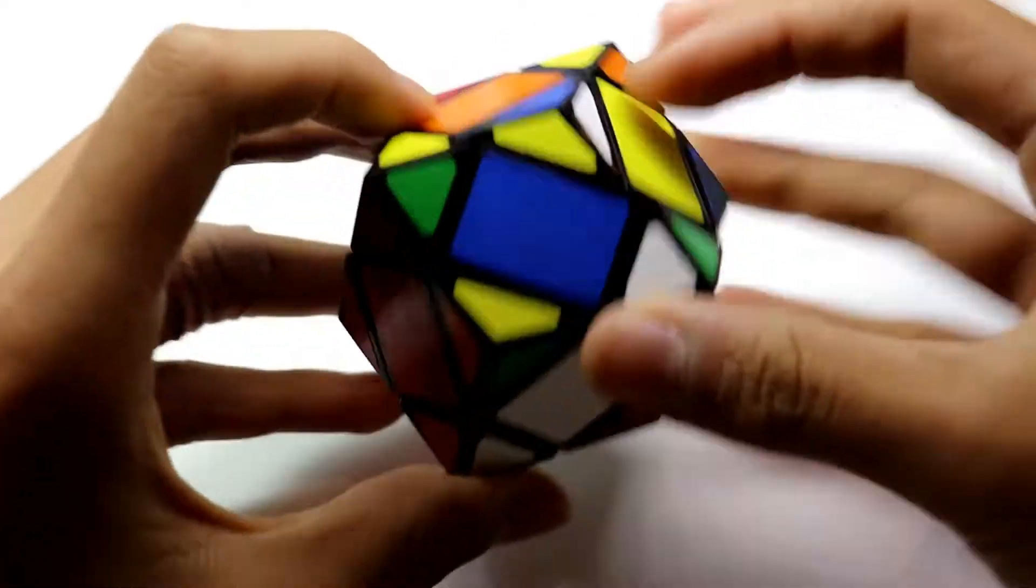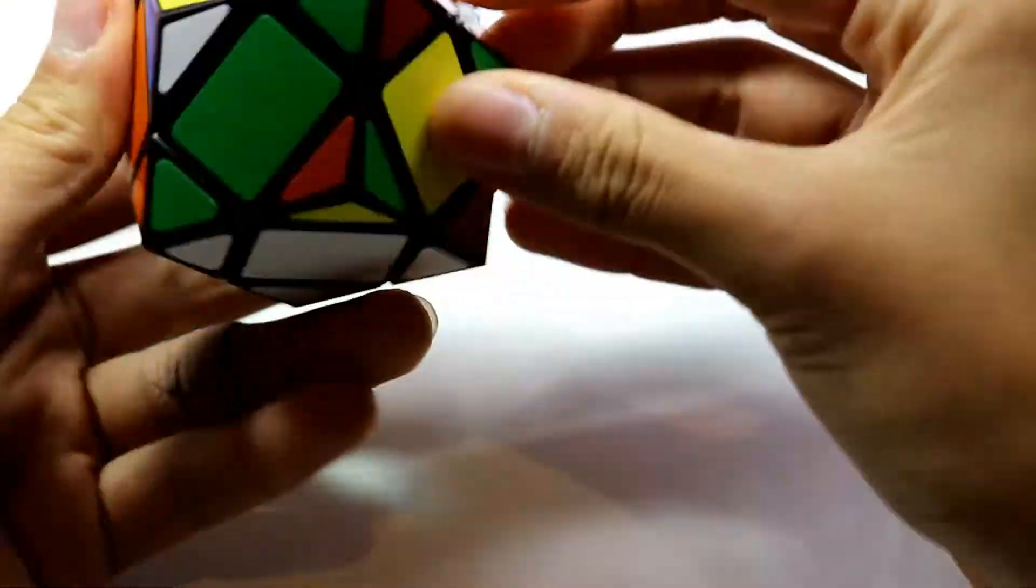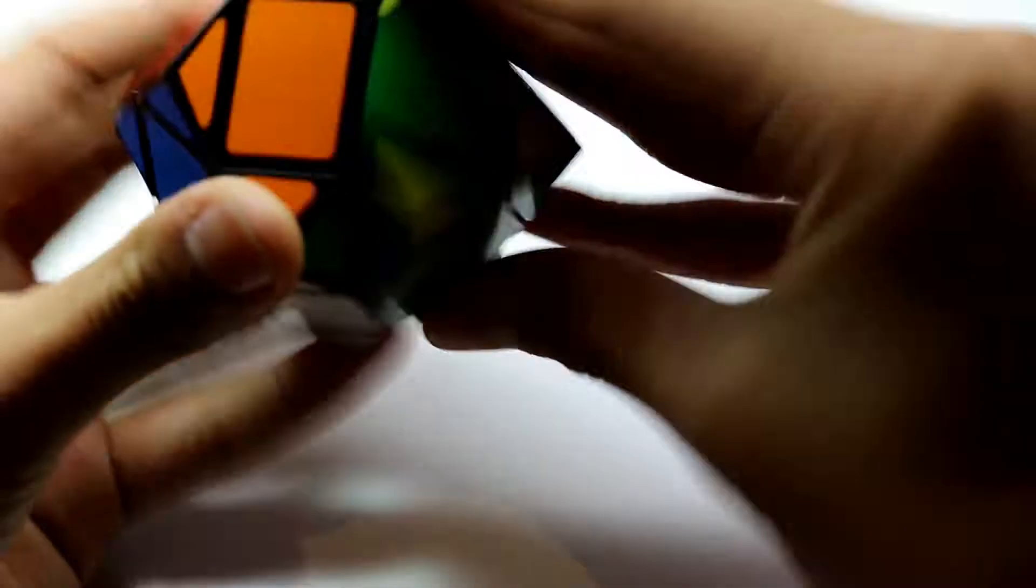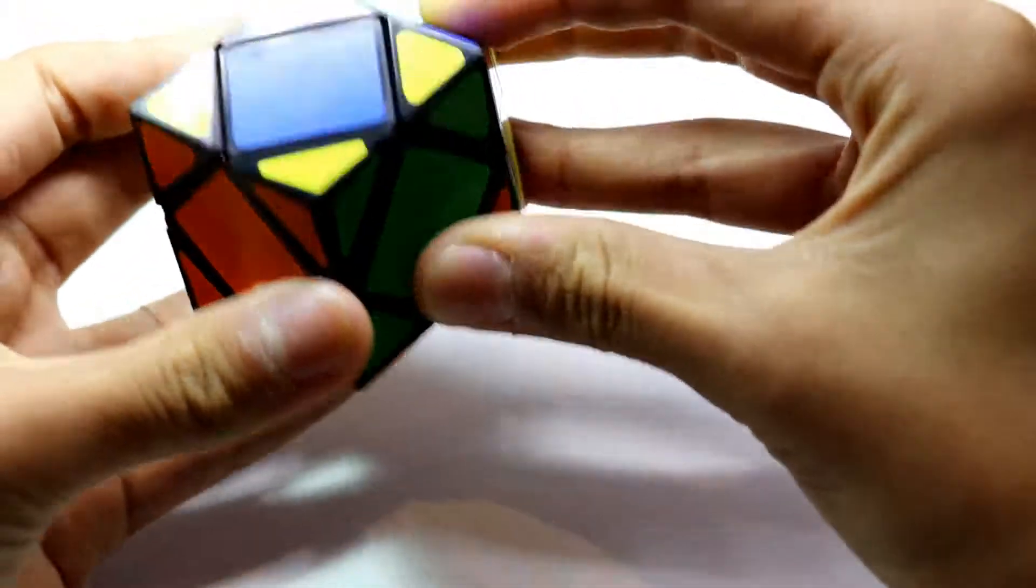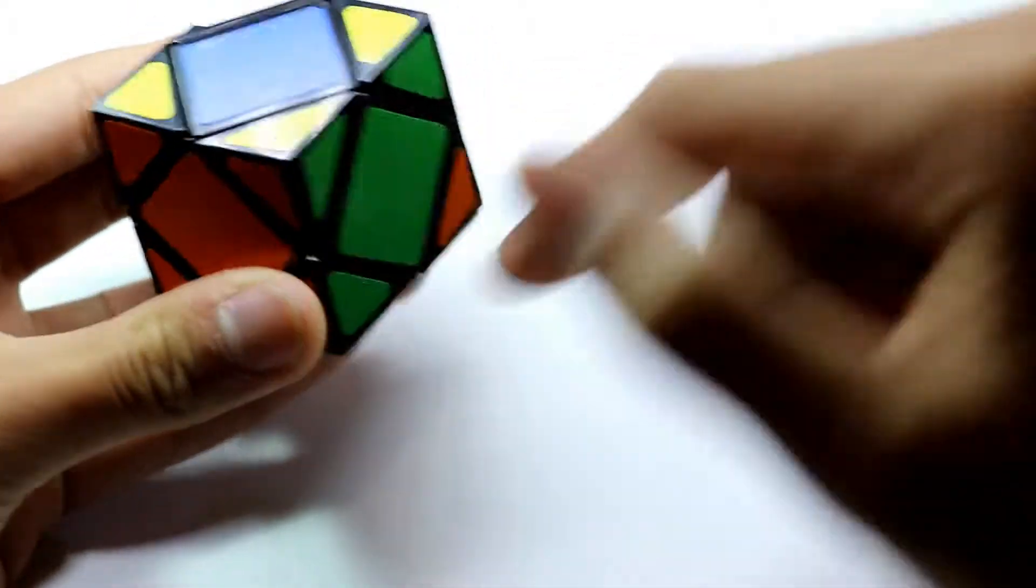So if you just insert it like a normal 3x3, just like that. The corner is in place. Yellow, yellow, yellow. So we're good.